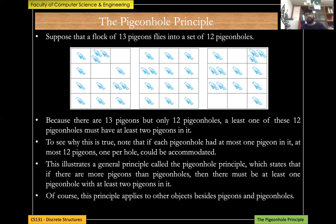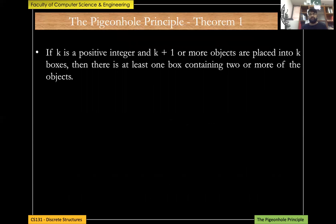Formally, the pigeonhole principle theorem states: if k is a positive integer and k+1 or more objects are placed into k boxes, then there is at least one box that contains two or more of the objects. This guarantees that at least one such box exists.